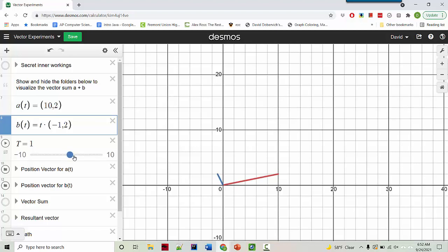So here's time equals 1, 2, 3, 4, 5, 6, 7, 8. And this is just b of t by itself as a position vector. So that's why you see it starting at the origin.